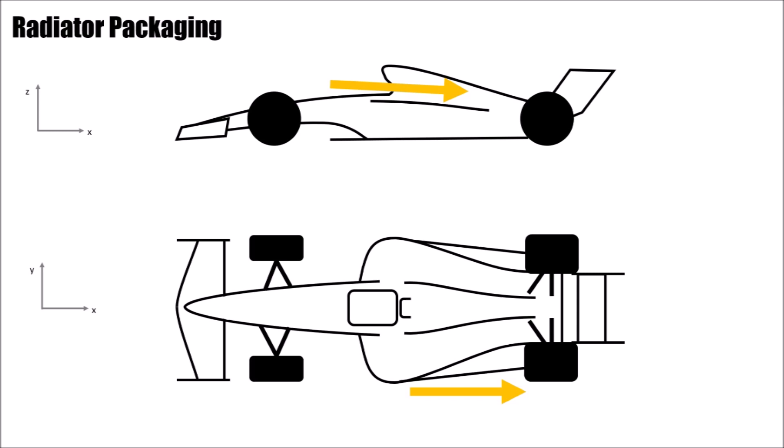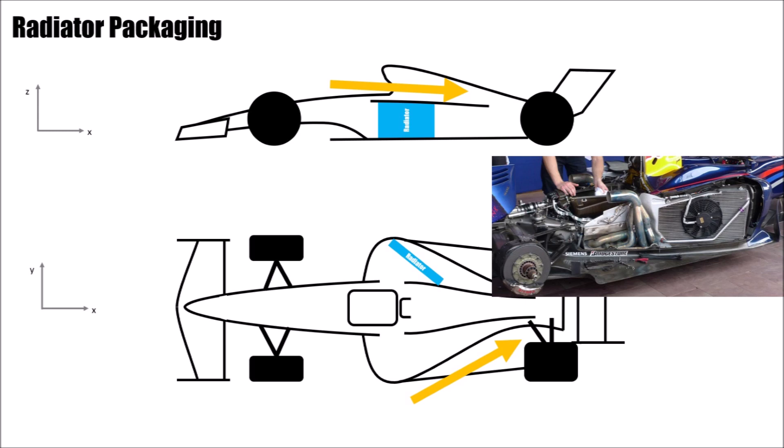Instead of having a small radiator facing the airflow 90 degrees to flow direction, they installed larger radiators and angled them around the Z axis. That way, they could have slimmer bodywork at the back and guide air around the inner side of the rear wheels to the back.